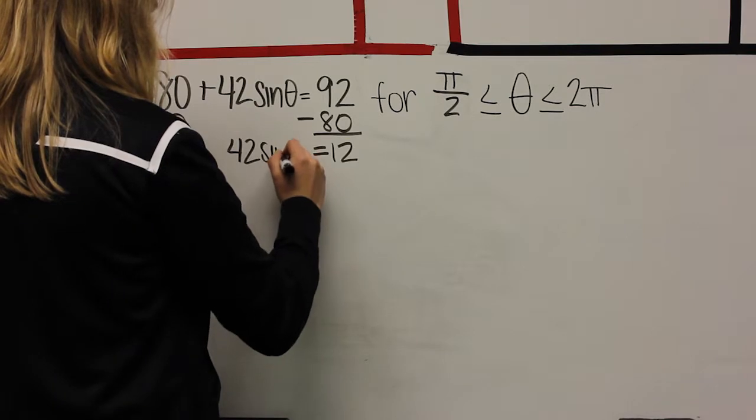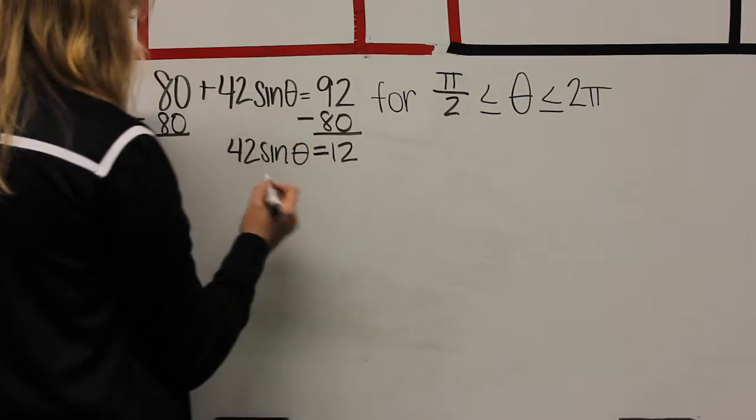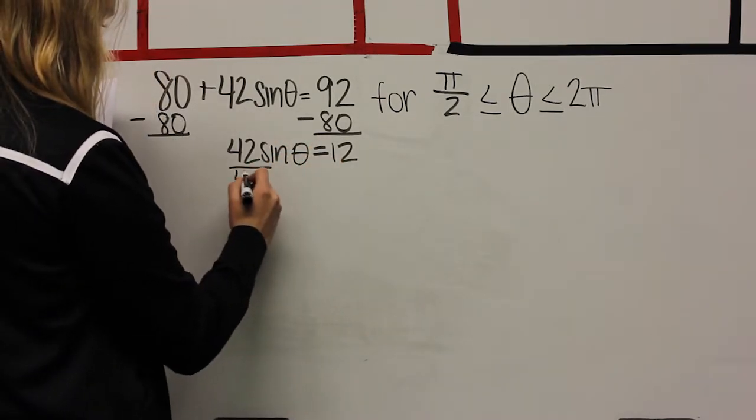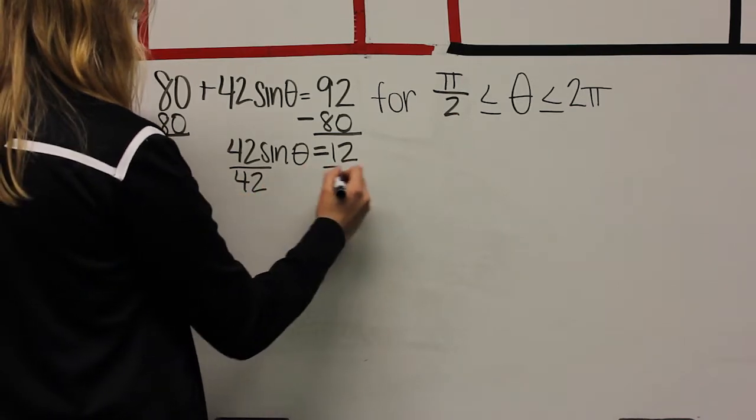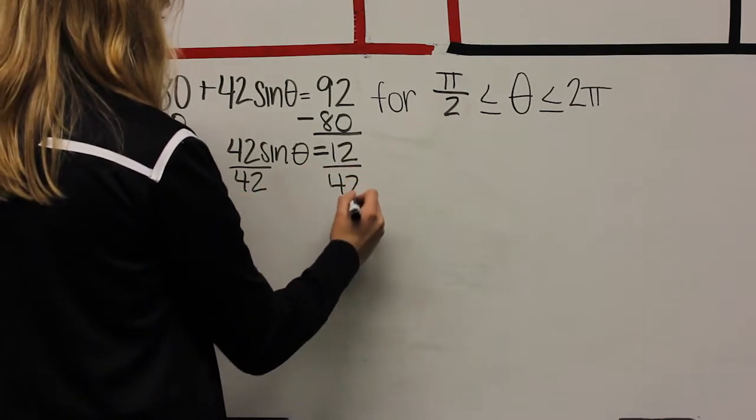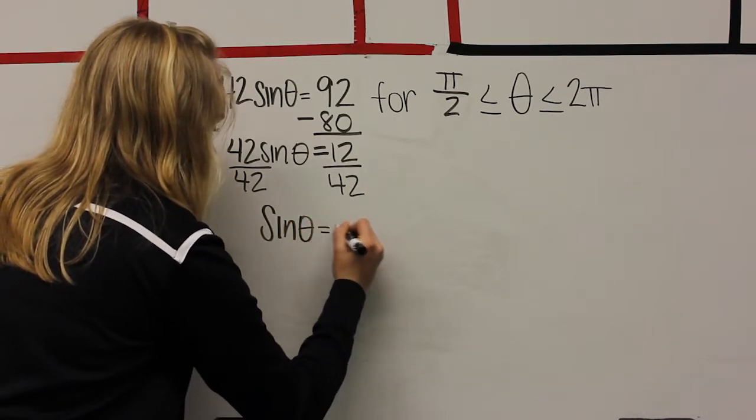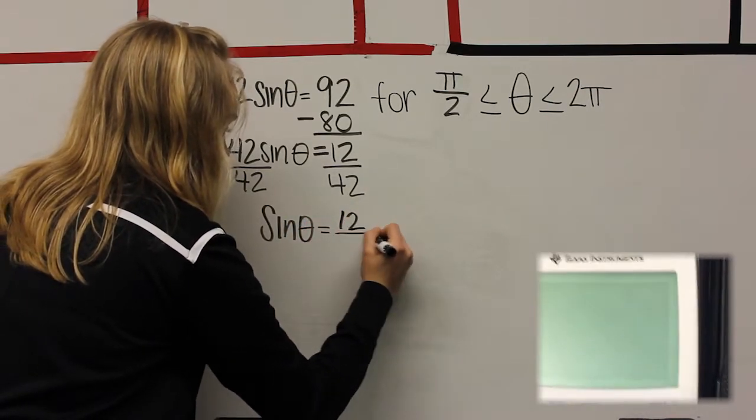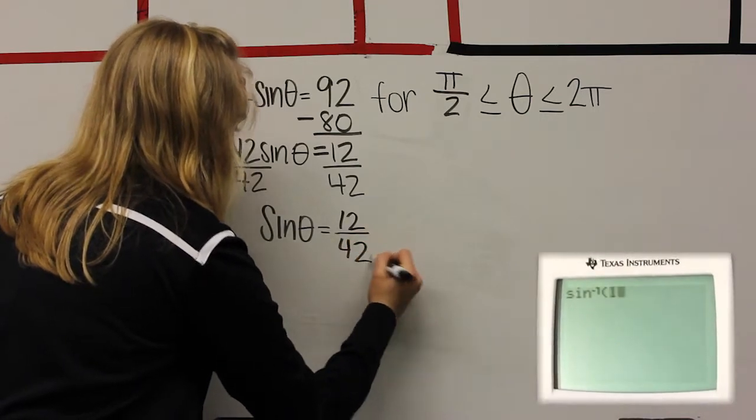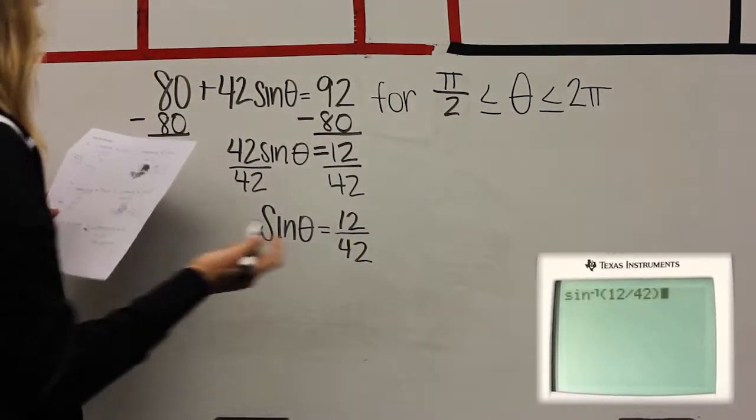For problem B, the new domain is pi over 2 to pi. So after you isolate sine by itself, you get sine equals 12 divided by 42. Once you type this in your calculator as inverse sine of 12 divided by 42, your answer is in quadrant 1. Take this answer and subtract it from pi.